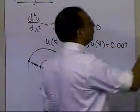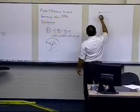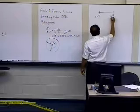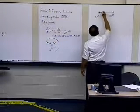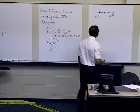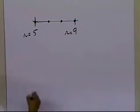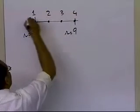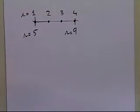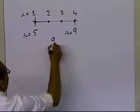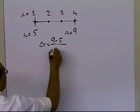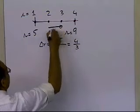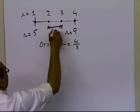Let's suppose we are starting from r equal to 5 and ending at r equal to 9. What we can do is divide this into equidistant nodes. So let's call them node 1, node 2, node 3, node 4 — that is i equal to 1, 2, 3, 4. Since we are dividing into 3 segments, delta r, the distance between each node, is 9 minus 5 divided by 3, which is 4 divided by 3 units.